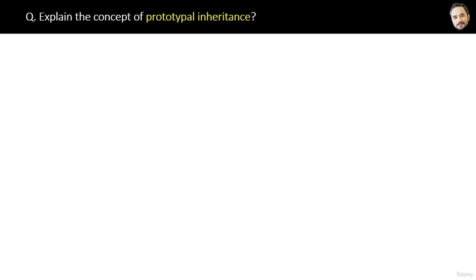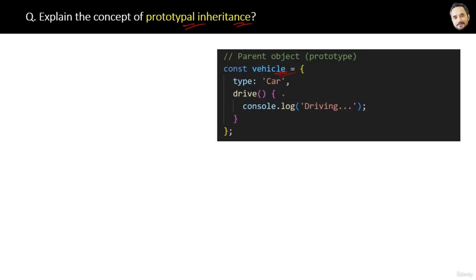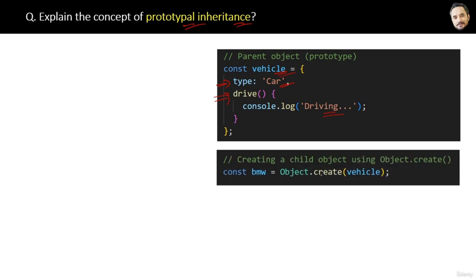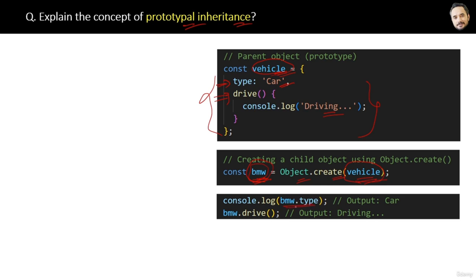Explain the concept of prototypal inheritance. Suppose we have an object 'vehicle' with a 'type' property set to 'car' and a drive() function. We can create a new child object using Object.create(vehicle), creating a 'bmw' object. This is prototypal inheritance — the child object inherits or acquires all the properties of the parent object automatically. If we log bmw's type, the result will be 'car', which is inherited from the parent vehicle object.